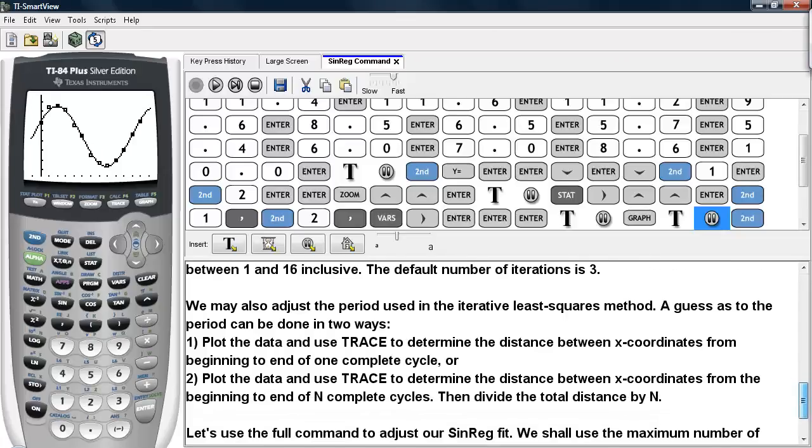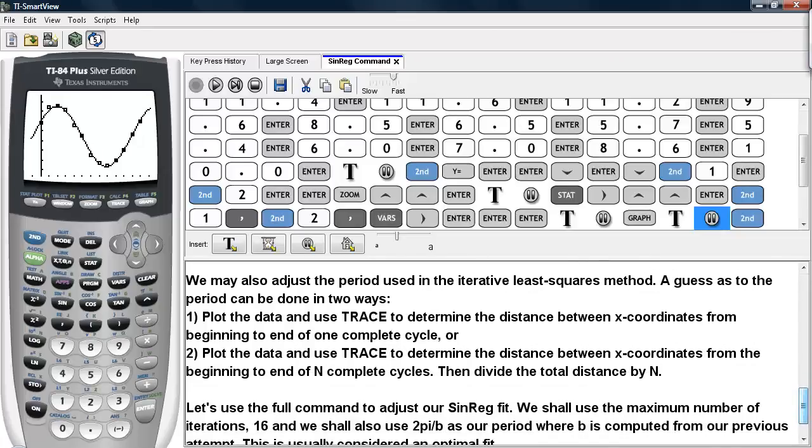And we can also adjust the period used in the iterative least squares method. And a guess as to the period can be done in two ways. You can plot the data and use trace to determine the distance between x-coordinates from the beginning to end of one complete cycle. Or you can plot the data and use trace to determine the distance between x-coordinates from the beginning to the end of n complete cycles, and then divide this total distance by n.